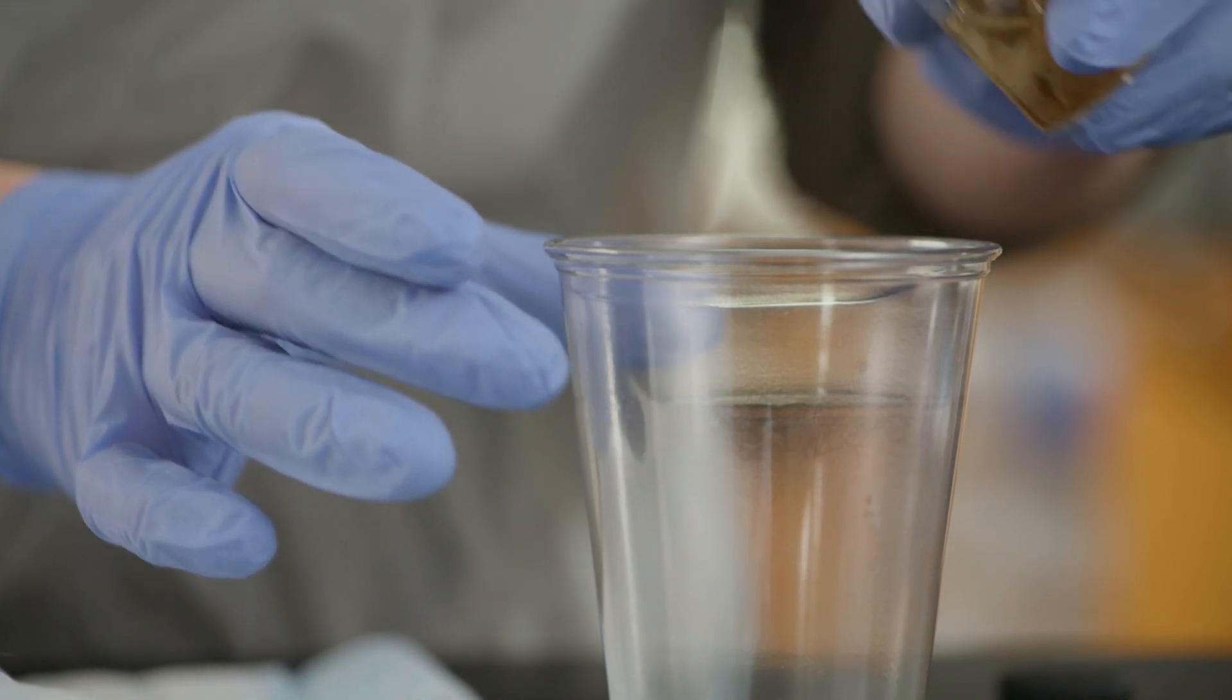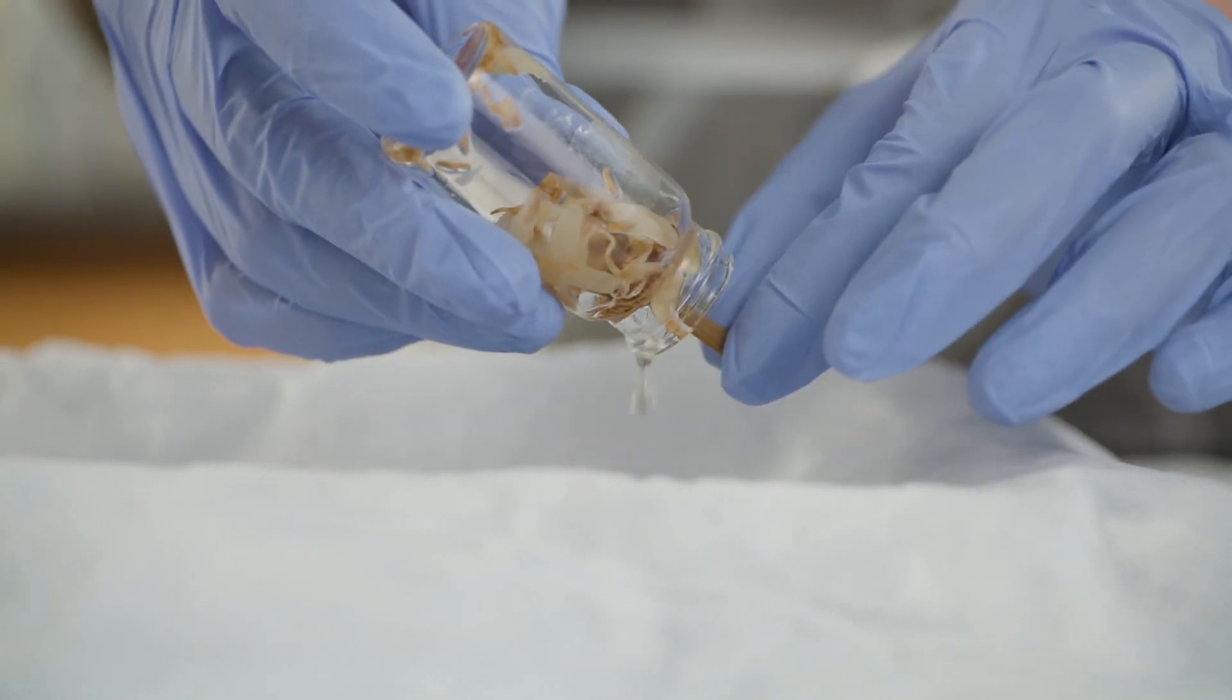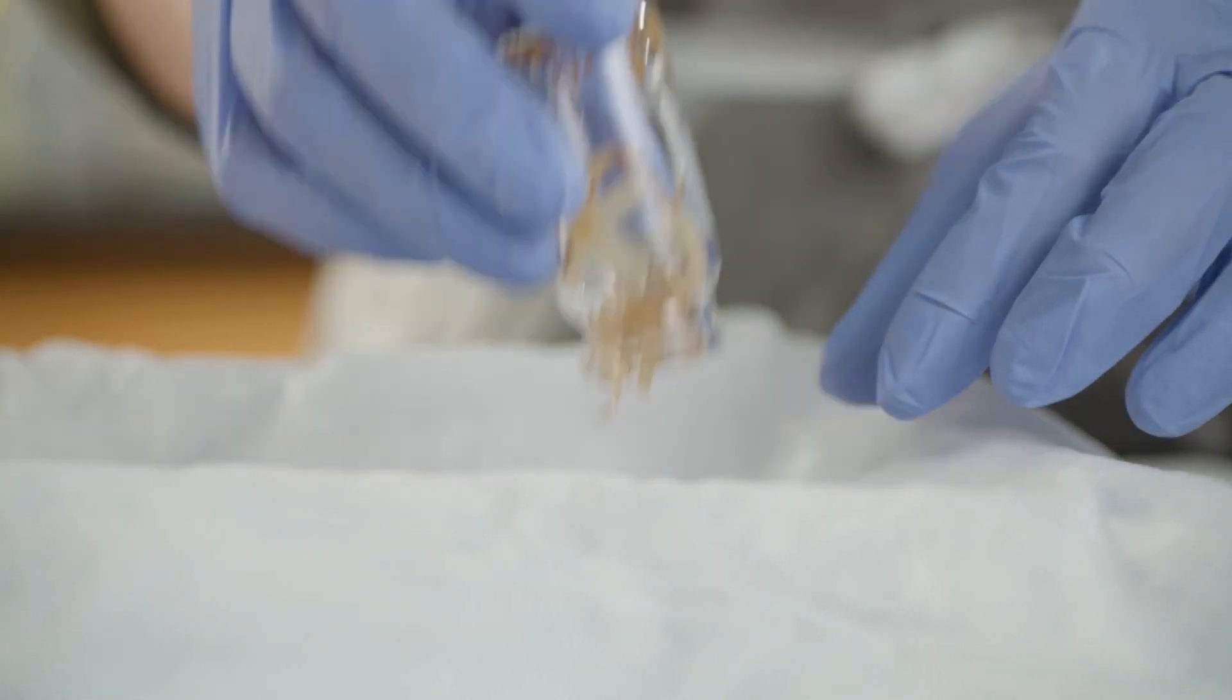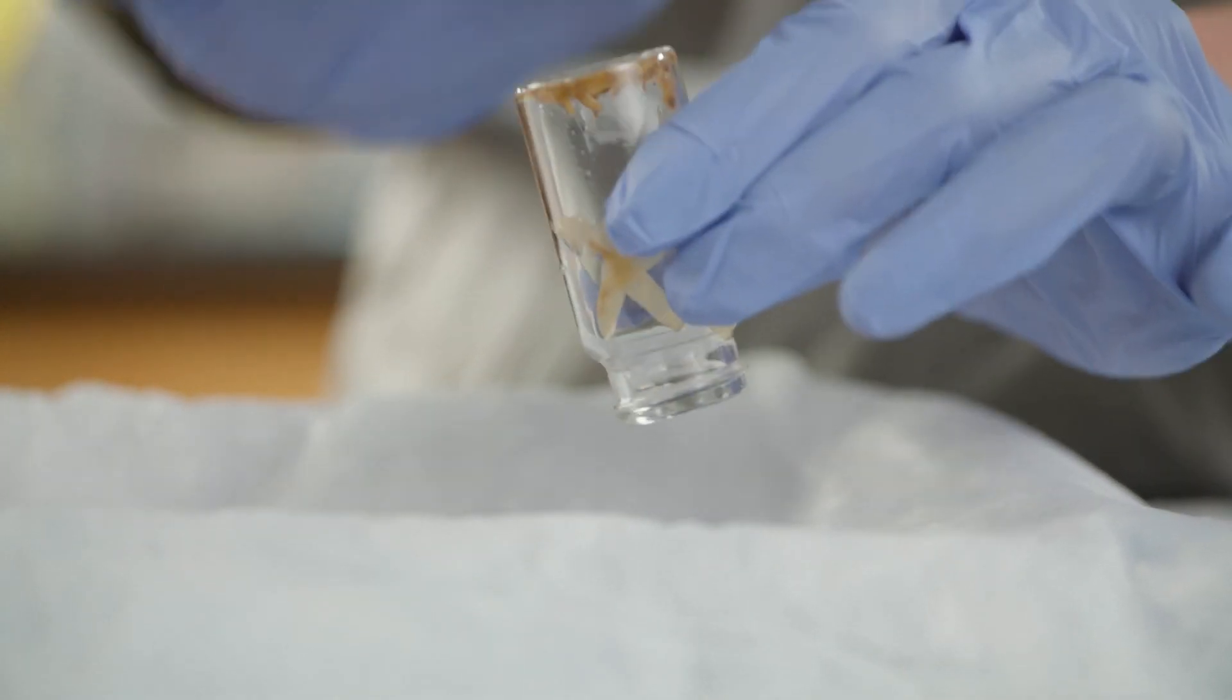This may require you to drain most of the preservation fluid into a disposable cup and then pour out the structures onto your dissecting tray or paper towels. These structures can still be identified and counted for the investigation.